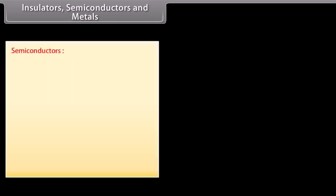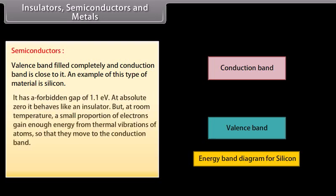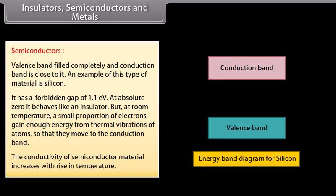Semiconductors have a completely filled valence band and a conduction band close to it. An example is silicon, which has a forbidden gap of 1.1 electronvolts. At absolute zero, it behaves like an insulator. But at room temperature, a small proportion of electrons gain enough energy from thermal vibrations of atoms so that they move to the conduction band. The conductivity of semiconductor material increases with rise in temperature.